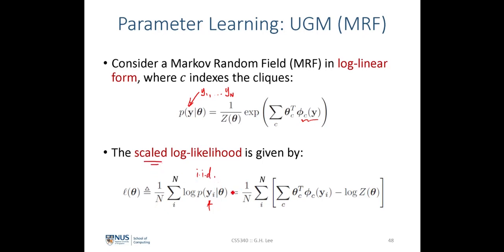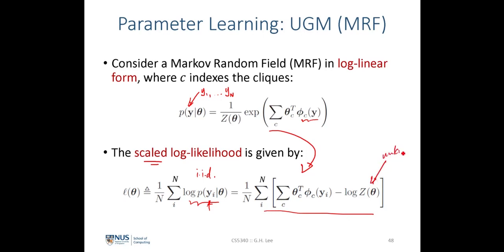We can evaluate this term by plugging the log likelihood into the equation to get the full expression. The objective is: given this, we want to learn the unknown parameters theta that characterize the joint probability distribution. We will be given n observations of these random variables and want to find this unknown set of parameters.